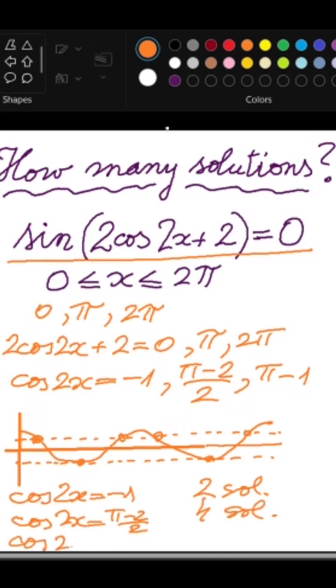If cosine of 2x is pi minus 1, because pi minus 1 is a number greater than 1, that means we will get 0 solutions.